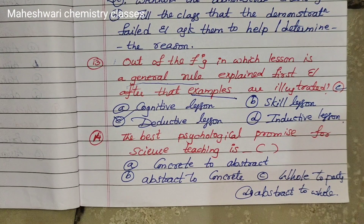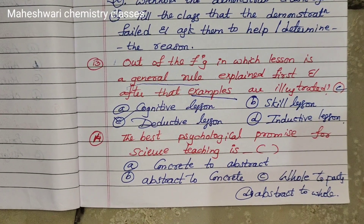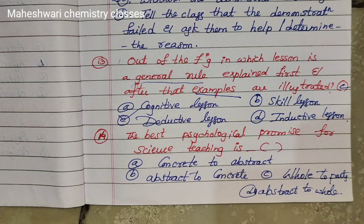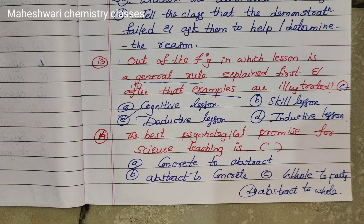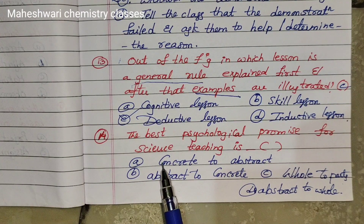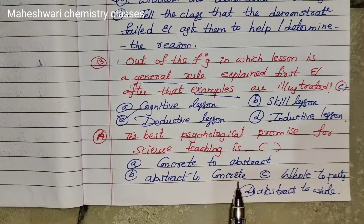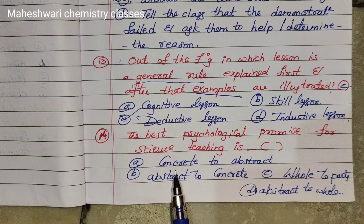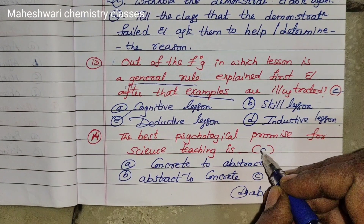Fourteenth question: The best psychological principle for science teaching is concrete to abstract, all to part, or abstract to all. The correct answer is concrete to abstract. Fourteenth one is option A.